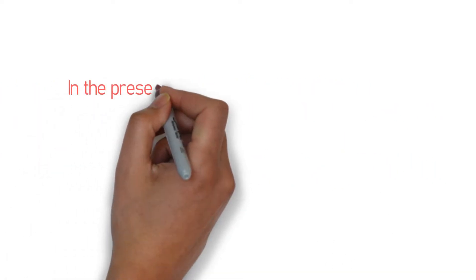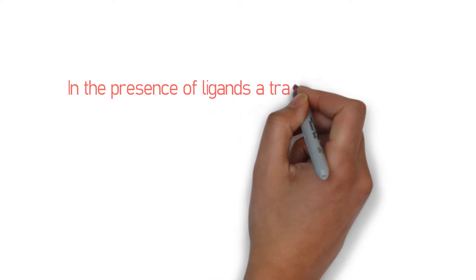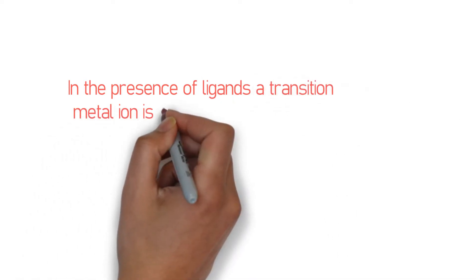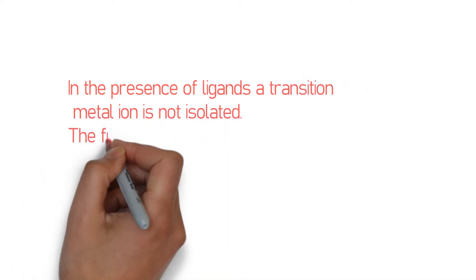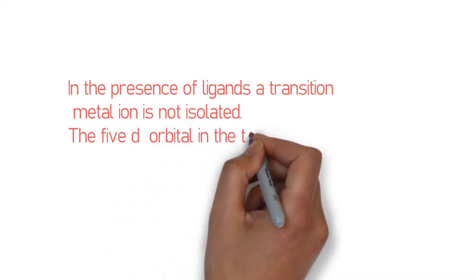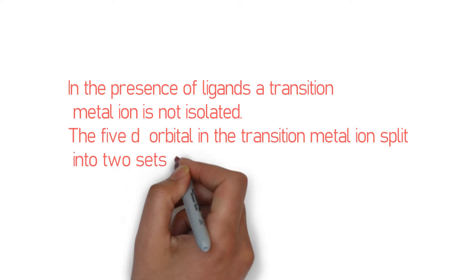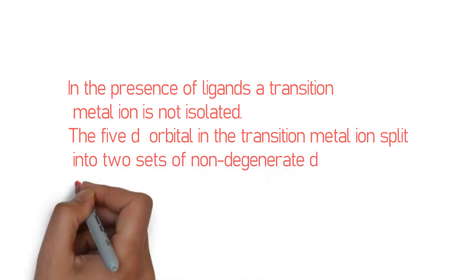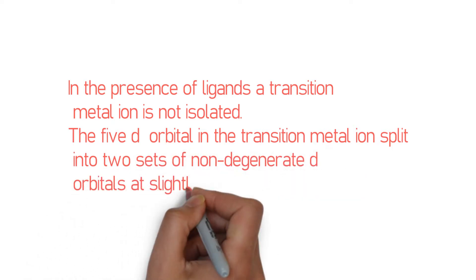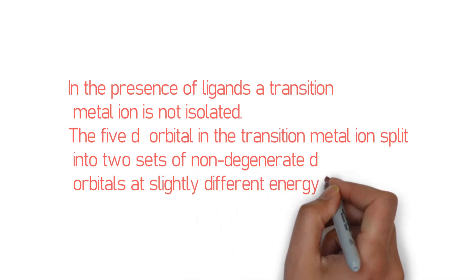In the presence of ligands, the transition metal ion is not isolated. The 5d orbitals in the transition metal ions split into two sets of non-degenerate d orbitals having difference in energy level.